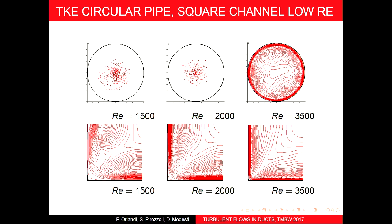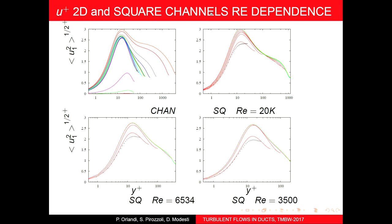Starting to have turbulent energy, you can see it initially appears everywhere, then becomes concentrated closer to the wall. The total turbulent energy summing over everything is larger at this intermediate Reynolds number compared to the lower Reynolds numbers.